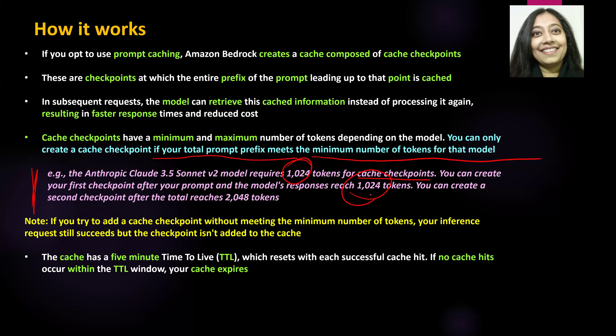You can create your first checkpoint after your prompt and the model's responses have reached 1024 tokens. You can create your second checkpoint after your total reaches 2048 tokens, which is essentially double. If you do not meet these requirements, your cache checkpoint will not be created. However, your inference request will still succeed — you will get a response back — but a checkpoint will not be created and will not be added to the cache.